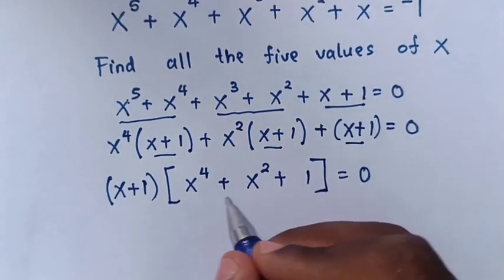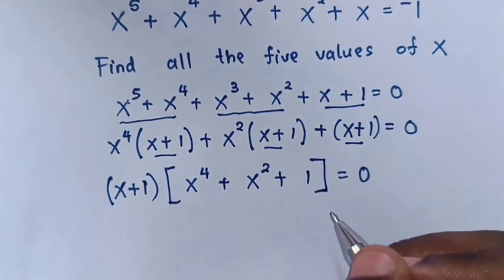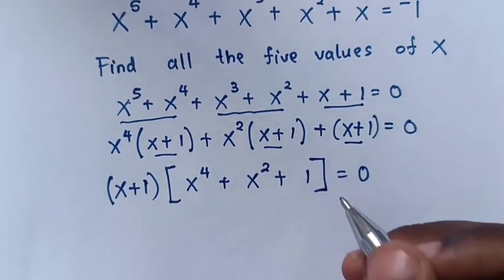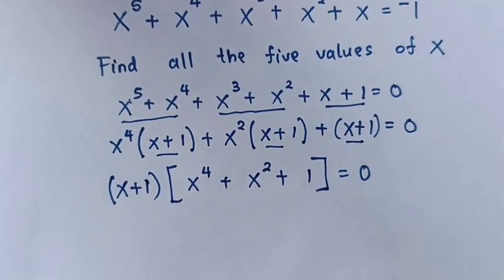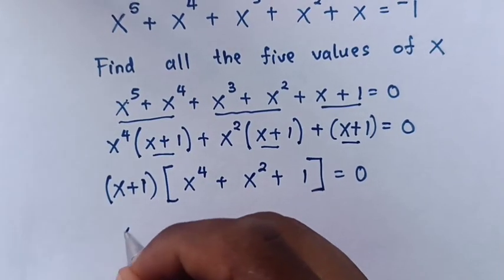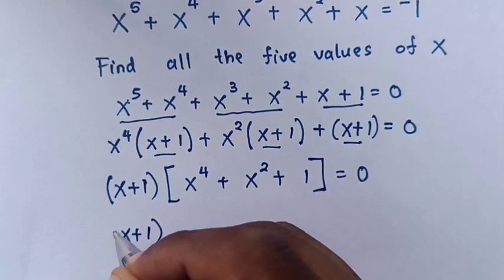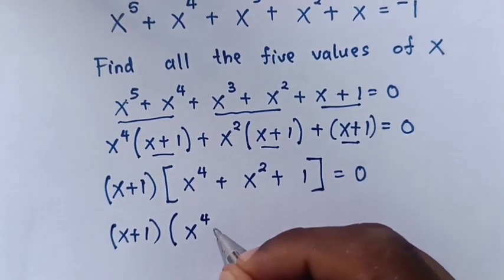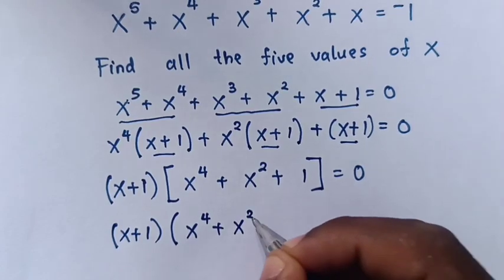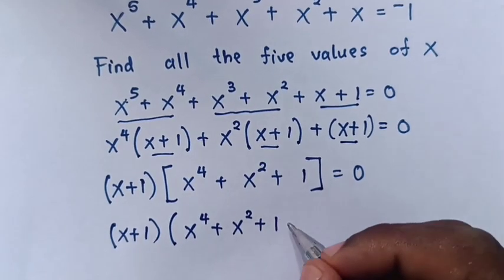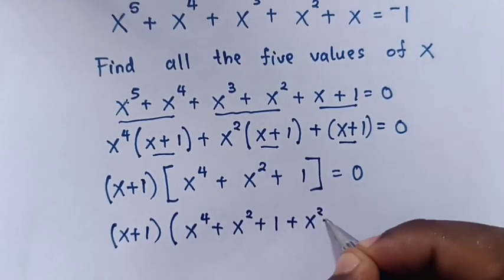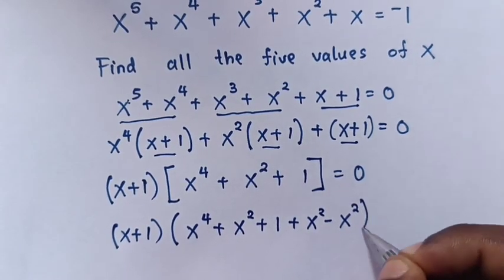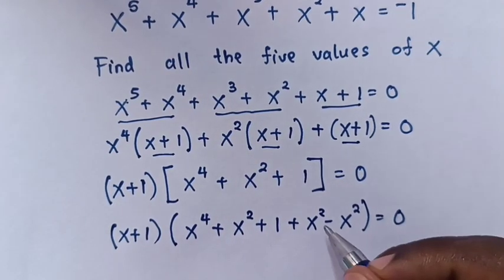Then, from here, we will add x² and minus x², which is the same thing. So in our equation it will be (x + 1)(x⁴ + x² + 1 + x² − x²) = 0.